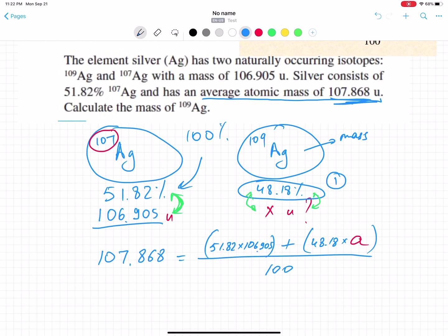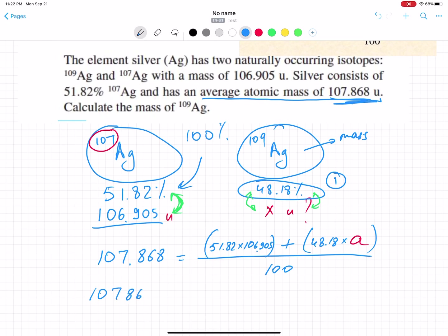When you solve this equation, you will get - or let's solve it together. 107.868 equals let's find this number: 51.82 times 106.905. You can do that without the percentage, so this would be much easier. That equals 55,398.171 plus 48.18a.